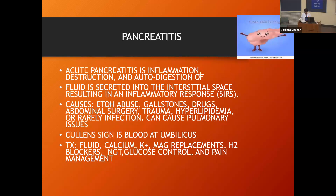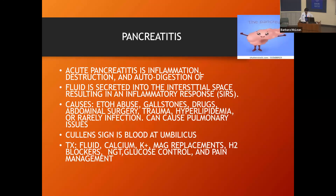The pancreas — we relate it most to diabetes, where patients can't secrete or don't produce enough insulin. Acute pancreatitis is inflammation that has a high effect on how the pancreas can function. Fluid is sometimes secreted into the interstitial space, resulting in SIRS — a systemic inflammatory response. Know about SIRS because it will likely come up on the test.